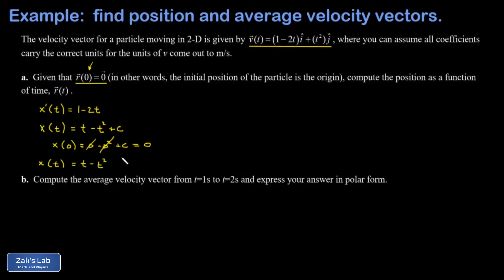We do a similar thing for the y coordinate. The j hat part of our velocity vector is actually y prime of t, that's the time derivative of the y coordinate. We're told that's equal to t squared. We quickly guess the antiderivative of that which is one third t cubed plus c.